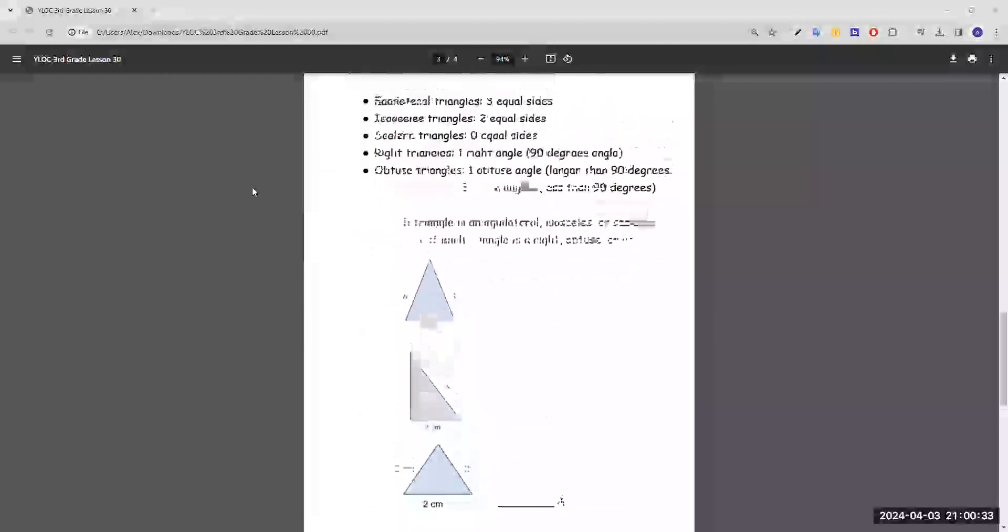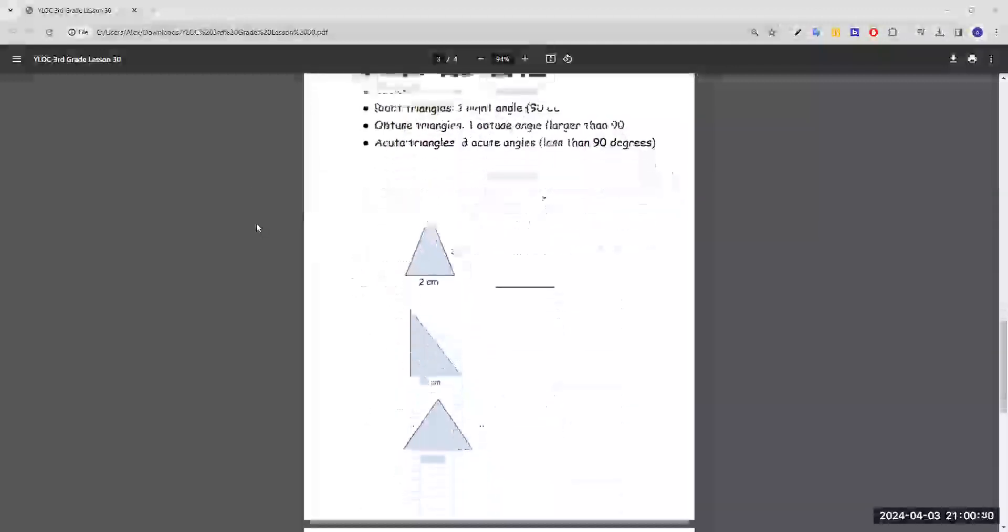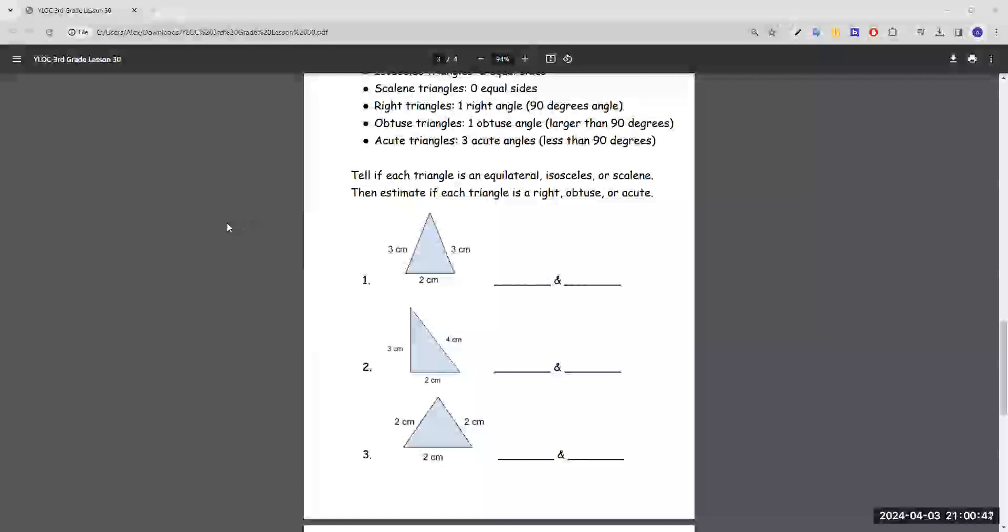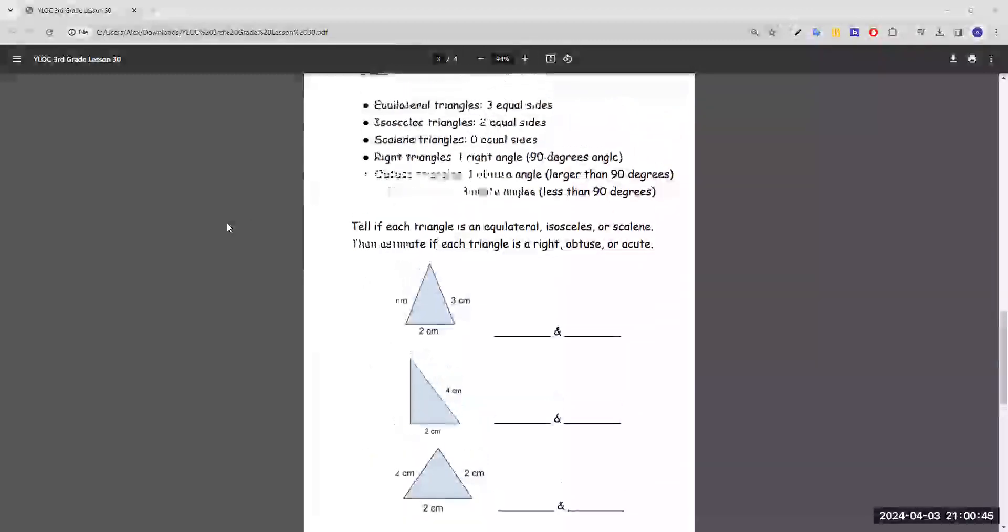Moving on to triangles. Tell if each triangle is equilateral, isosceles, or scalene. Then estimate if each triangle is right, obtuse, or acute. So there's two ways to define a triangle, by its side and by its angle. And we're going to define each triangle by its side and angles for these three triangles.